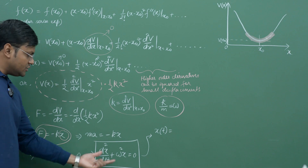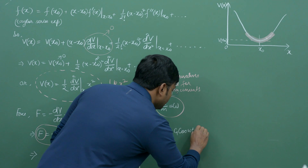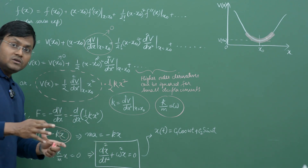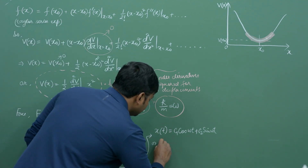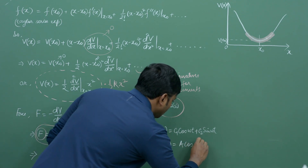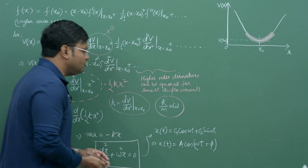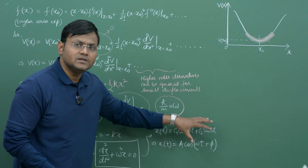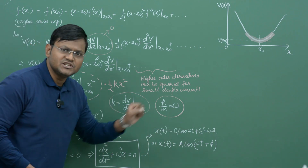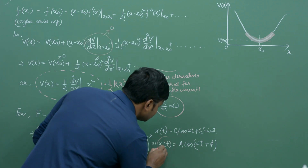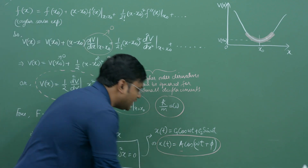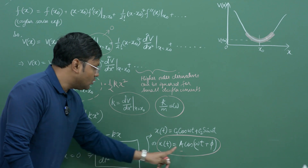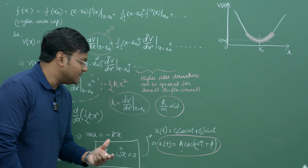The standard solution for this differential equation can be written as x(t) equals c1 cos(omega t) plus c2 sin(omega t), with two constants c1 and c2. An alternate equivalent way of representing the same solution is x(t) equals A cos(omega t plus phi), where A and phi are two constants. Both forms are equivalent and are solutions of this standard differential equation. Most of the time we use this second standard form.